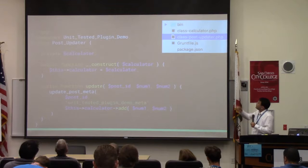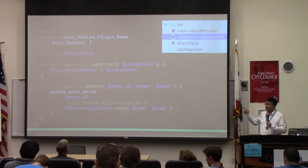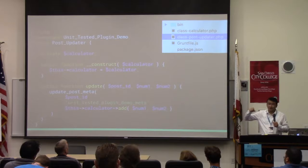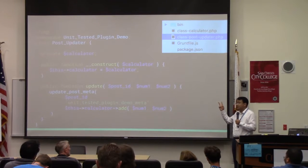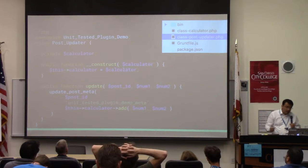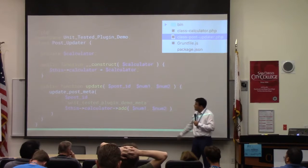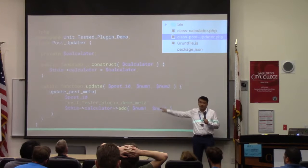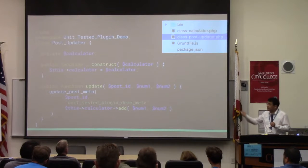If you want to test integration with WordPress, unit testing is not sufficient on its own. Let's say we have one more class called PostCapData and it has a constructor. This constructor expects a calculator instance — that's the instance of the class we just created — and it has an update method. The update method receives a post ID and two numbers, and it will add those two numbers using the calculator's add method.